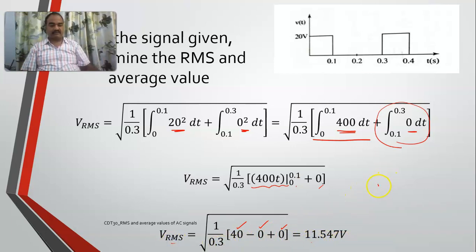Now if you carefully see, V RMS is 11.547 volts and V average is 6.66. Most of the times, you will get an RMS value higher than the average value. Try to remember this one.